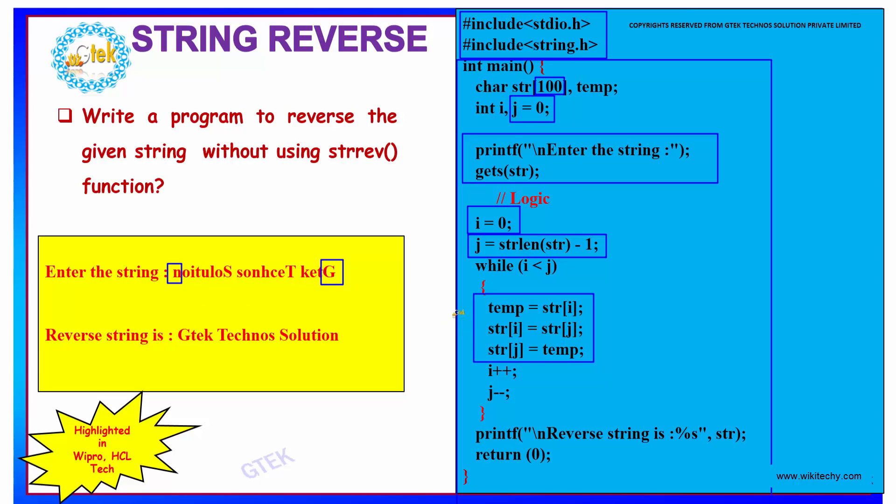And further, we are incrementing your i. That is your i will be next pointing out to this position. That is incrementing your i. And your j is decremented.